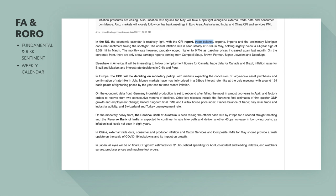In the US, the economic calendar is relatively light, with the CPI report taking all eyes — because ultimately central banks want inflation to come down. If inflation keeps rising, it creates an economic headache and a threat when it comes to the central bank not meeting their 2% target. You've also got trade balance, exports, imports, and preliminary Michigan consumer sentiment taking the spotlight.